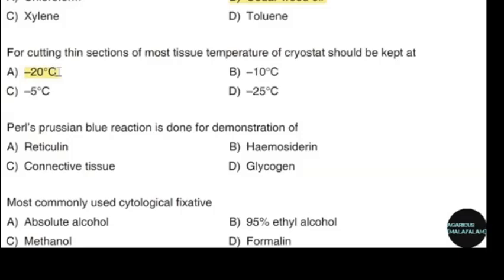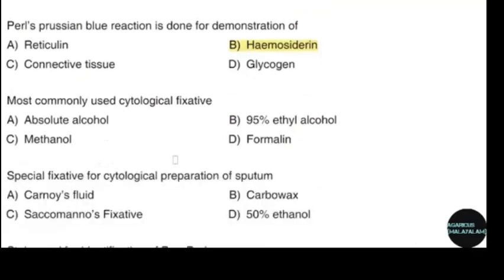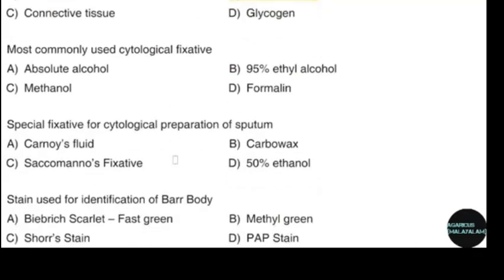Prussian blue reaction is done for demonstration of. Correct answer: option D — Hemosiderin. Most commonly used cytological fixative. Correct answer: option D — 95% ethyl alcohol. Special fixative for cytological preparation of sputum. Correct answer: option D — Saccomano's fixative.